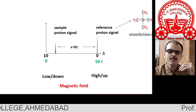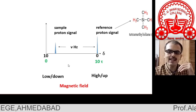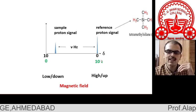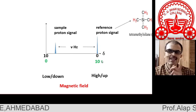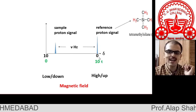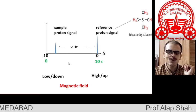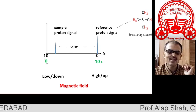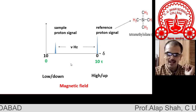Sometimes one more scale is used, called the tau scale, which is exactly the reverse of the delta scale. So 0 delta corresponds to 10 tau, and 10 delta corresponds to 0 tau.